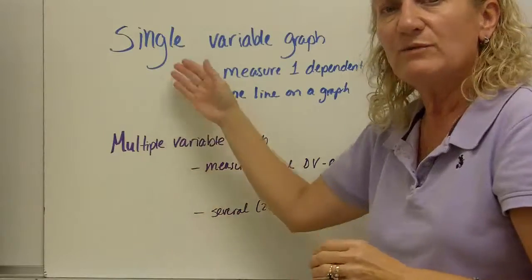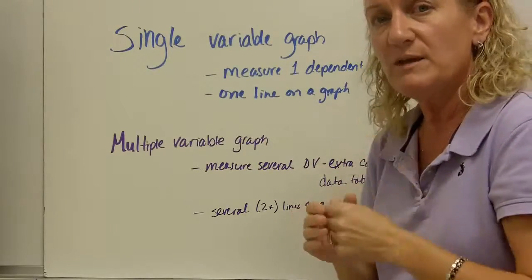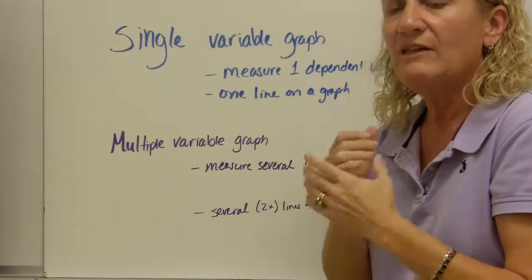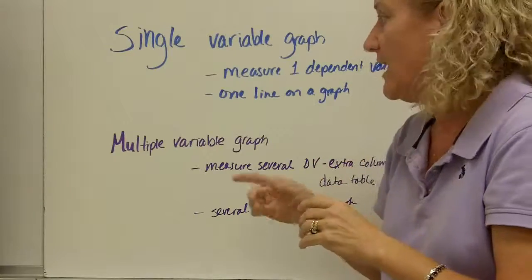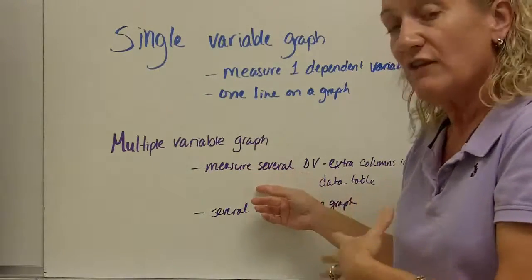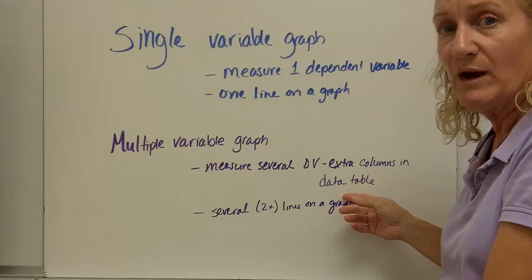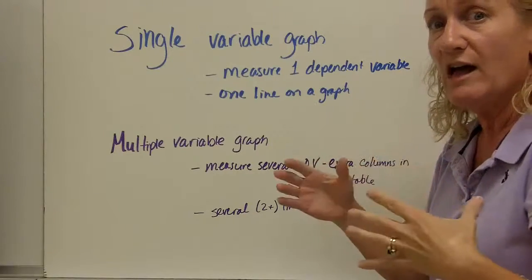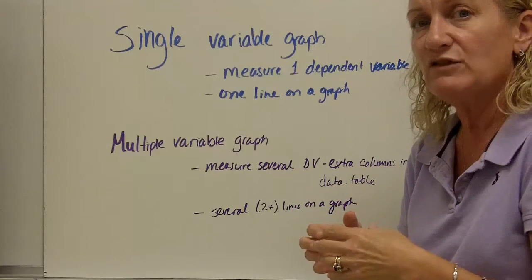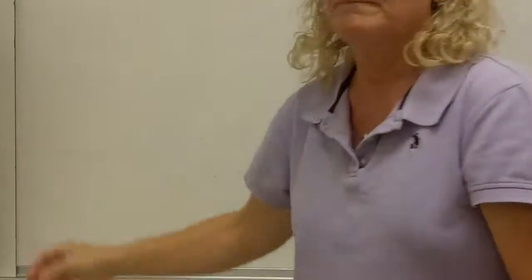We have two kinds of graphs that we're going to be focusing on in physics this year. One is a single variable graph. It measures one dependent variable, and that's going to only have one line. So if you have position time, and that's all you're measuring, you're only going to have one line on that. Sometimes, we're going to have multiple variables on our graph, which means we're going to measure several dependent variables at the same time. Our data table is going to be extra wide or extra long, depending on if we write it horizontally or vertically. So we're going to have more rows or more columns. And you're going to have several, at least two lines on each graph. That's kind of a signal that you have a multiple variable graph.